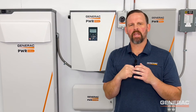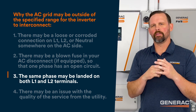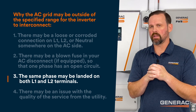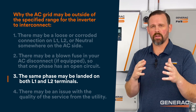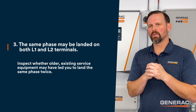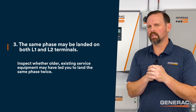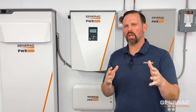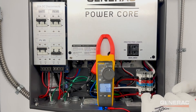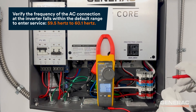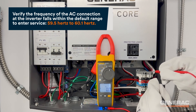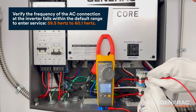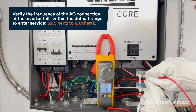Reason number three: if you don't measure nominal voltage of 240 volts line to line at the AC grid connection terminals of the inverter, and instead you measure zero volts, inspect whether older existing service equipment may have led you to land the same phase twice. If AC voltage measurements check out, change your selector to measure frequency. Verify the frequency of the AC connection at the inverter falls within the default range to enter service, 59.5Hz to 60.1Hz.